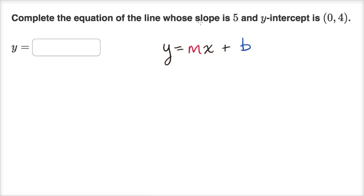Well, they're telling us our slope is five, whose slope is five. So we know that m is going to be five, and they tell us that the y-intercept is zero four. So the y-intercept b, that is the value of y when x equals zero. So the value of y when x equals zero is this four right over here. So that is going to be four.